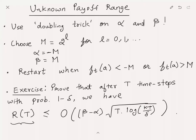Without proving this, using the same proof as the unknown time horizon case, you can show: after T time steps with probability at least 1 - delta, the cumulative regret R(T) is at most (beta - alpha) * sqrt(T * log(kT/delta)), the same regret bound as if you knew the range. I'll leave this as an exercise. With that we conclude the lecture on how to use the doubling trick to get past assumptions on known quantities. The doubling trick is an important technique — anytime you don't know a quantity but think it can be estimated online, it's a strategy worth trying.